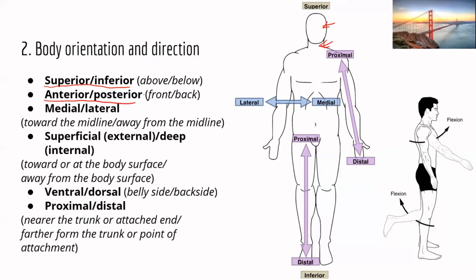The next set is anterior and posterior. Anterior refers to the front, and posterior refers to the back. For example, the sternum — the chest bone that you can feel if you press your chest — is anterior, and the back is posterior.